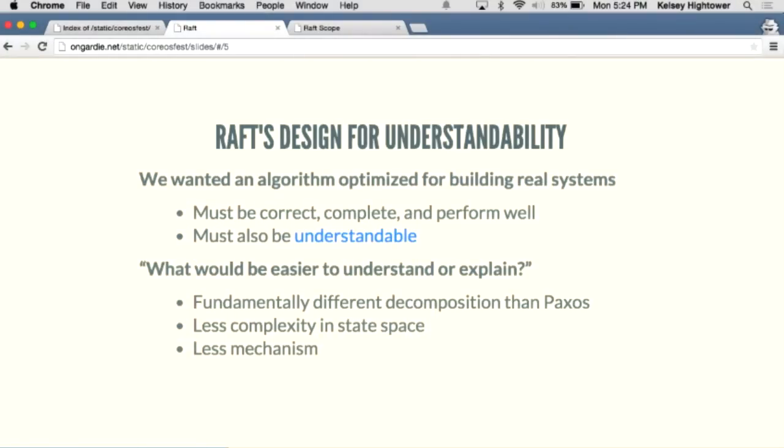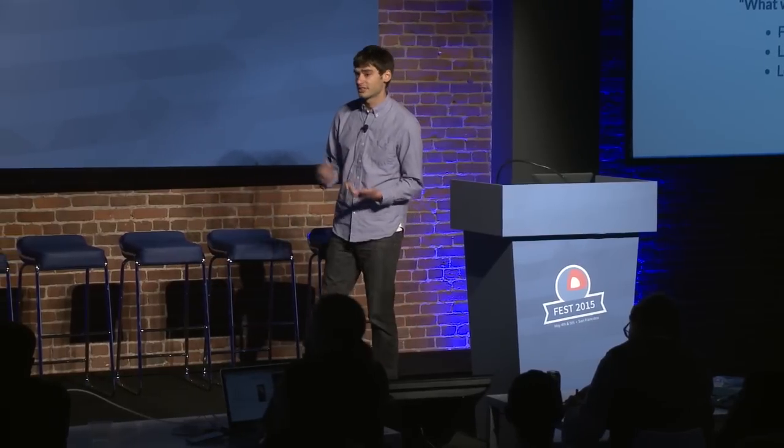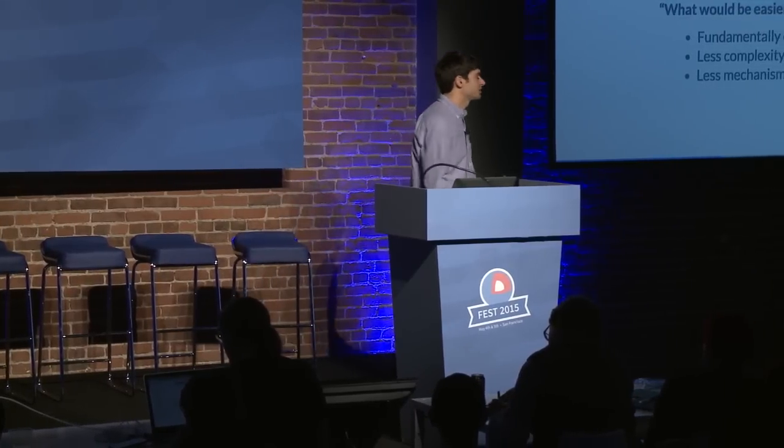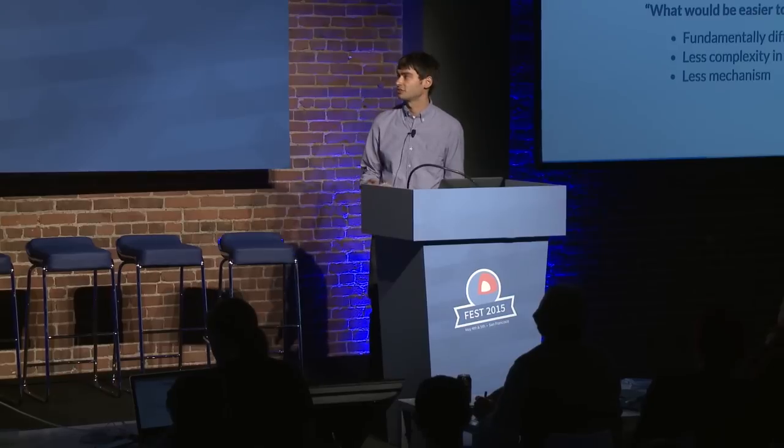With Raft, we tried to address these problems. Paxos is correct, complete, and performs well — and we wanted all those things — but we also really wanted Raft to be understandable, something we could teach in schools or that someone could pick up and learn in a few hours. Every step of the way, when we had a design choice to make, we asked: what would be easier to understand or explain? Raft has a fundamentally different decomposition than Paxos, restricts the ways servers can differ from each other, and has very little mechanism to arrive at the same end result of a replicated state machine.